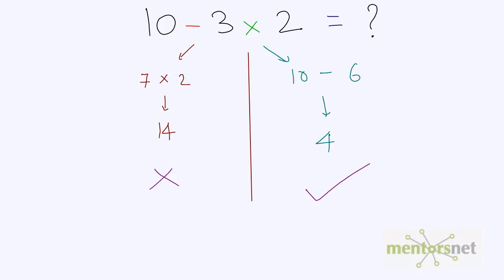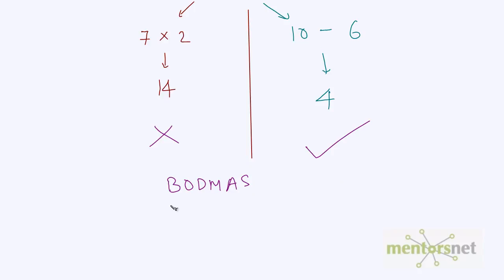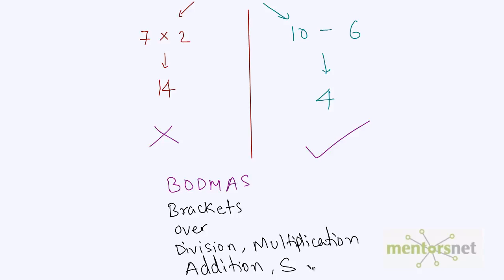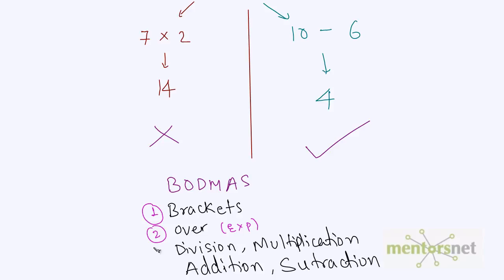So let's see what Bodmer's rule is. Bodmer's rule stands for Brackets, Over, Division, Multiplication, Addition, and Subtraction. This is the priority as stated by Bodmer's rule. Whenever you solve an expression, firstly you have to solve the brackets, then you have to solve the 'over' — over means exponentials, like 2 raised to 2. Thirdly, we have multiplication and division, which have the same priority. Then we have addition and subtraction, which again have the same priority.